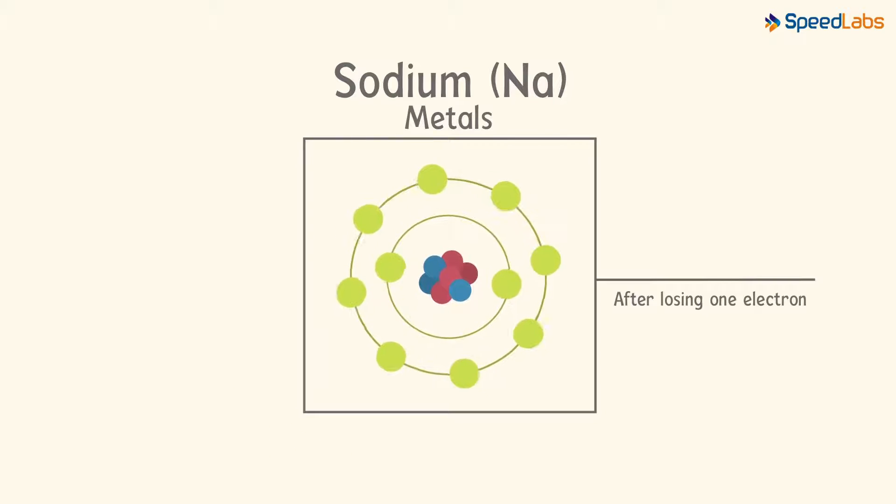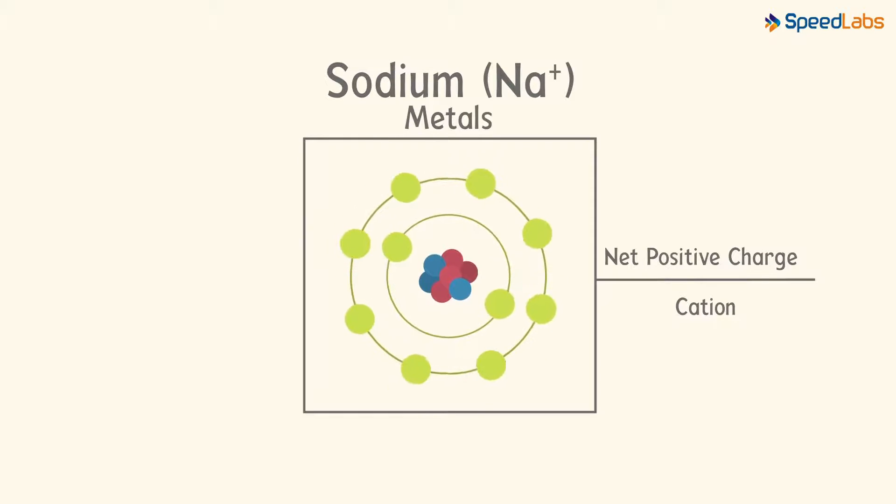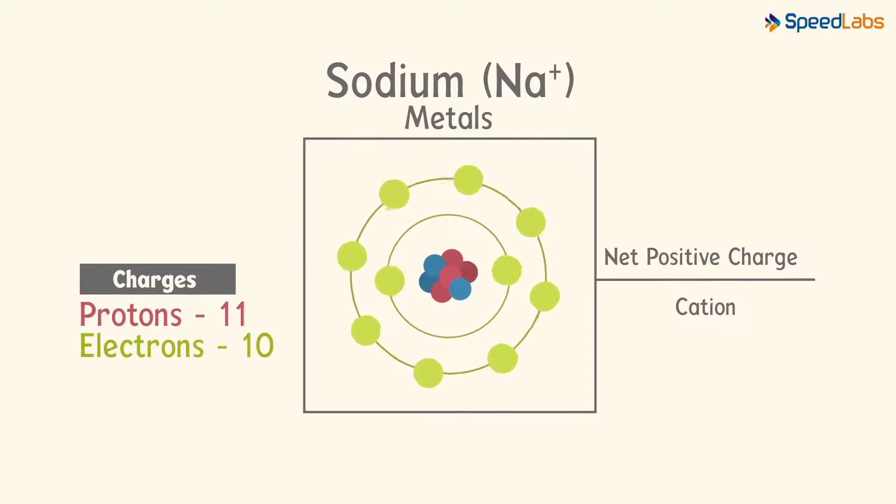Now when it loses the electron, there is a net positive charge which gives us a sodium cation Na+. Can you guess why? It's because the nucleus will still have 11 protons, but the number of electrons will become 10. Hence, there's a net positive charge.